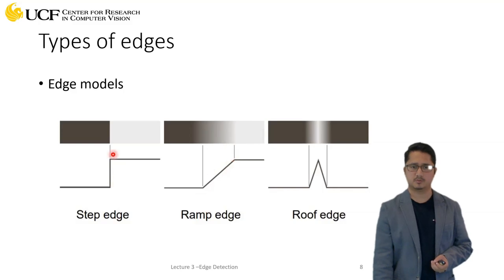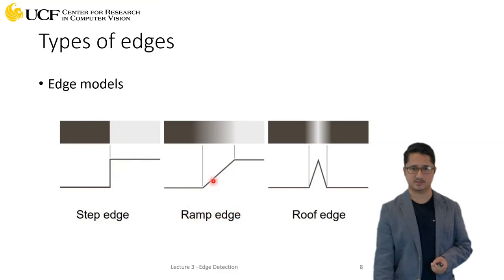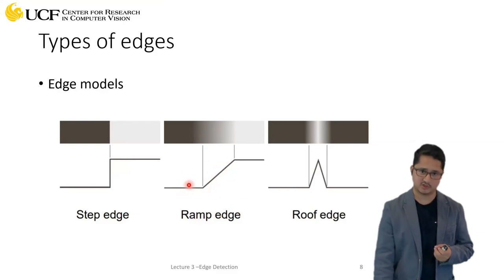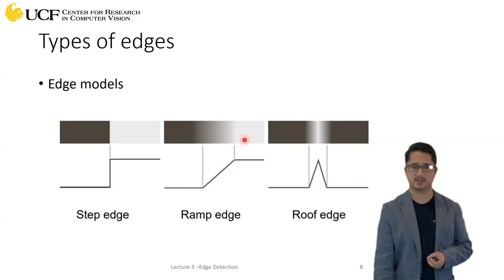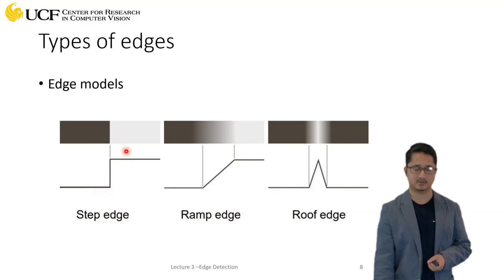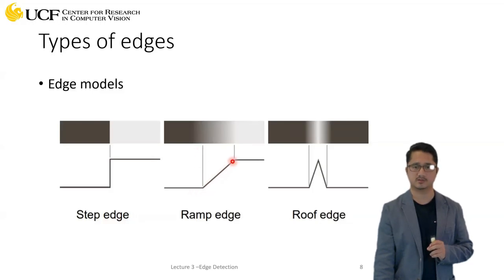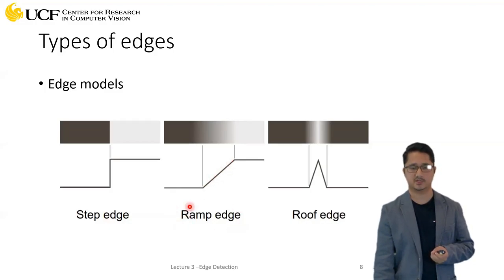Some edges may not be as sharp. These are called ramp edges, where the transition from one level to another happens gradually in a continuous fashion, rather than as an abrupt step.